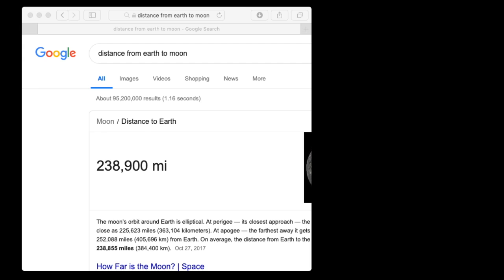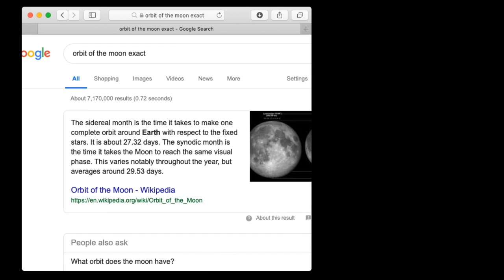Now, according to Google, which means it must be right, the distance from the Earth to the Moon is 238,900 miles. We got 245,219 miles. This means that we overestimated it approximately 3%. Now, where did that 3% error come in? First, the Moon's orbit is not exactly 28 days. As a matter of fact, it's actually 27.32 days. So, that's one source of error.